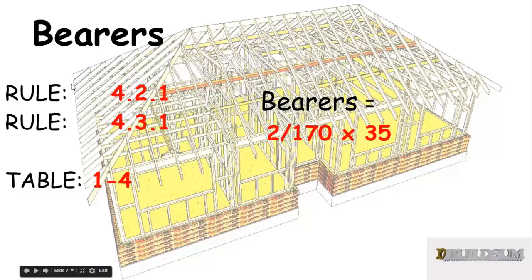So there we go — rules 4.2.1 and 4.3.1 are the ones that talk about bearers. Tables 1 to 4 are for the single storey or upper storey of a two-storey construction, and in my case I'm going to use two 170x35 as my bearers.